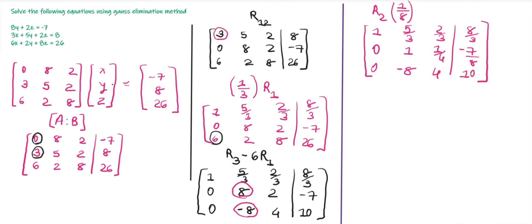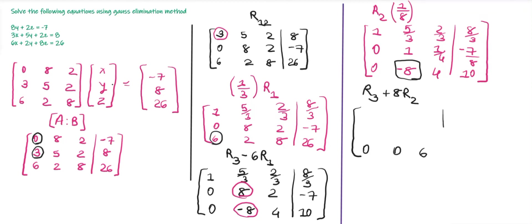Now we divide the second row by 8 (i.e., (1/8)R2) to make the leading entry 1: second row becomes [0, 1, 1/4 | −7/8]. The first and third rows remain the same. Our next row operation is R3 + 8R2 to make −8 equal to 0 (−8 + 8 = 0). After this transformation, the third row becomes [0, 0, 6 | 3].